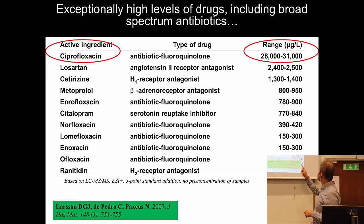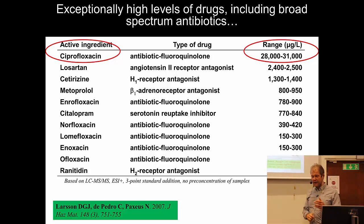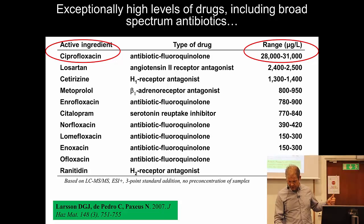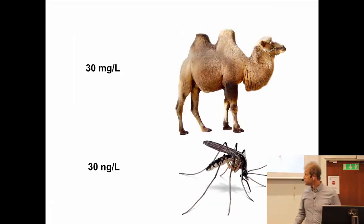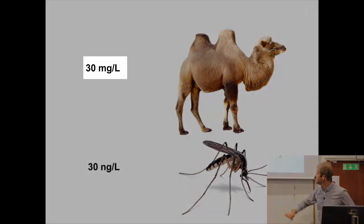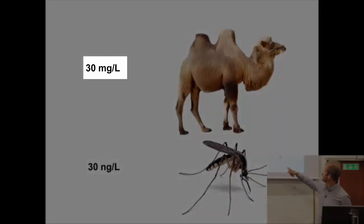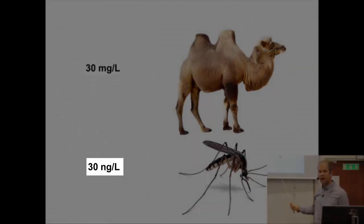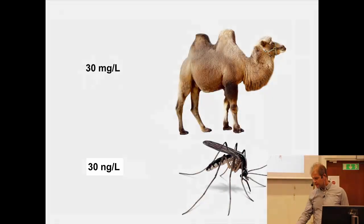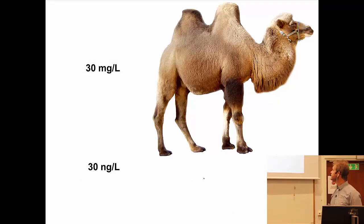This is maybe difficult to grasp, but the difference here is some nanograms, some micrograms. Just to give a picture: this is what we find in India of ciprofloxacin in this treatment plant. This is what we normally would find in a Swedish or European treated effluent. And this is about how big the difference is.